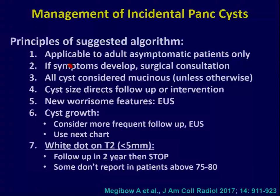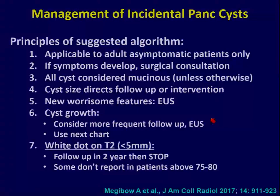The suggested algorithm applies only to adults who are asymptomatic — if symptoms arise, get surgical consult. All cysts are considered mucinous unless proven otherwise. Cyst size directs follow-up or intervention. At any time, if there are new features, EUS is recommended. Cyst growth should prompt more frequent follow-up and EUS. For cysts that are T2 bright and less than five millimeters, one follow-up in two years then stop is suggested — and for patients 75 to 80 years of age, some may not even be reported.